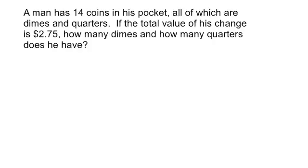A man has 14 coins in his pocket, all of which are dimes and quarters. If the total value of his change is $2.75, how many dimes and how many quarters does he have?